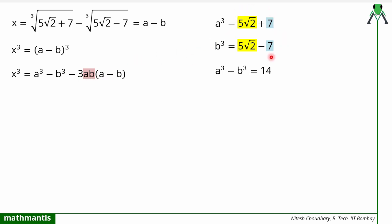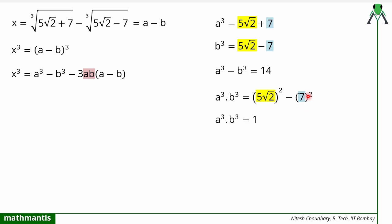This kind of expression is quite common in mathematics — 5√2 + 7 and 5√2 - 7 are irrational conjugates of each other. Multiplying them gives (5√2)² - 7² = 25·2 - 49 = 50 - 49 = 1. So (ab)³ = 1, and taking the cube root gives ab = 1.